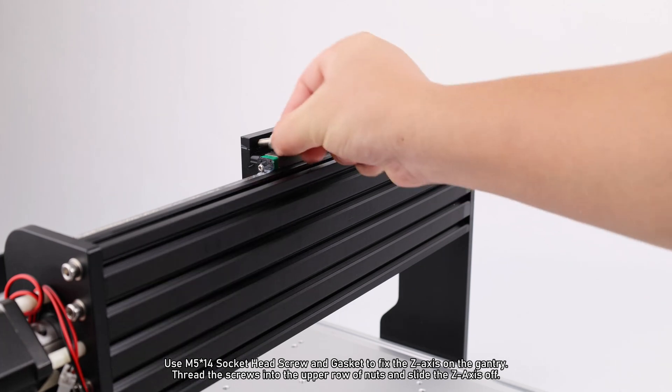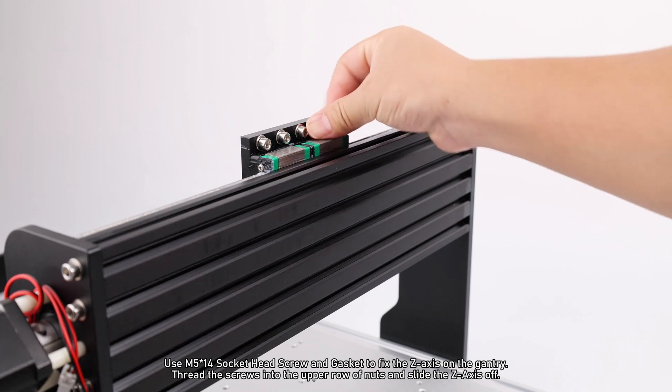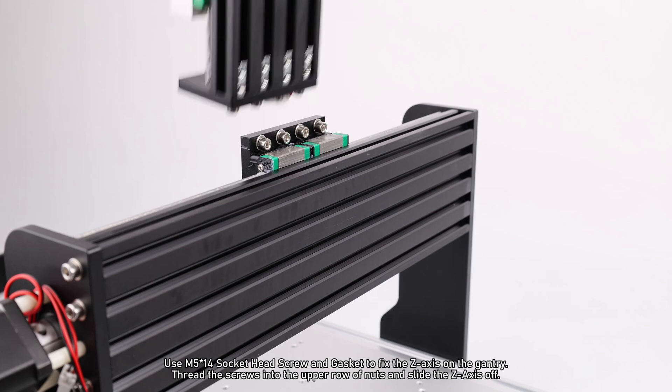Use M5×14 socket head screw and gasket to fix the Z axis on the gantry. Thread the screws into the upper row of nuts and slide the Z axis on.